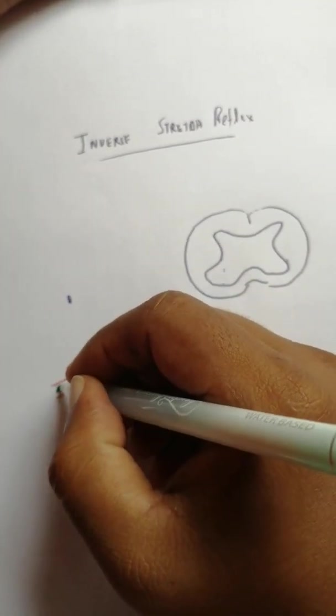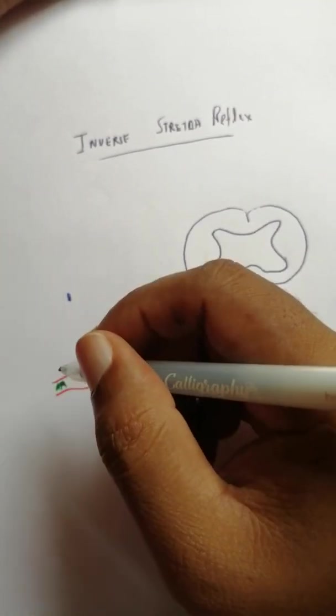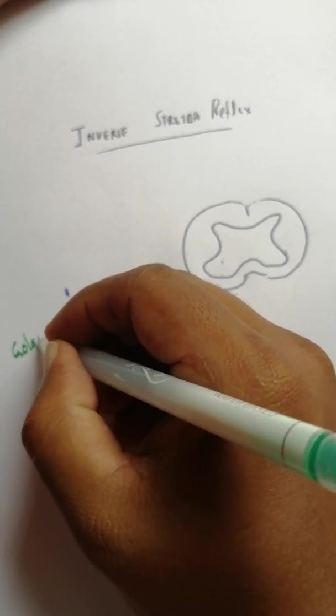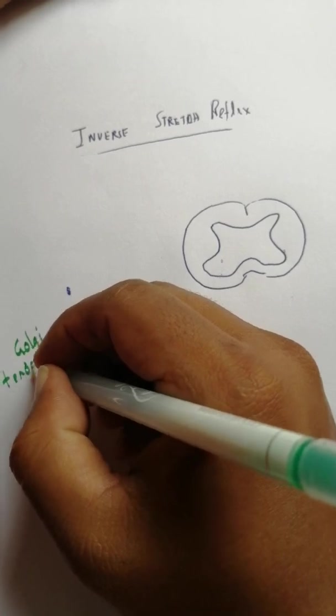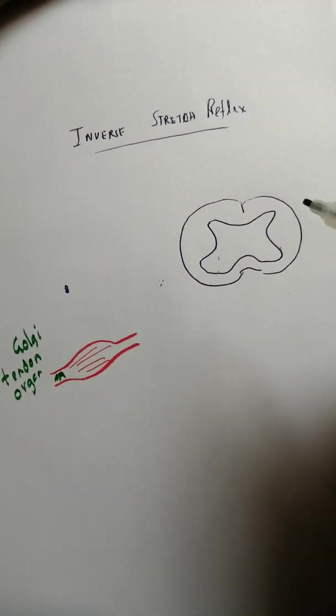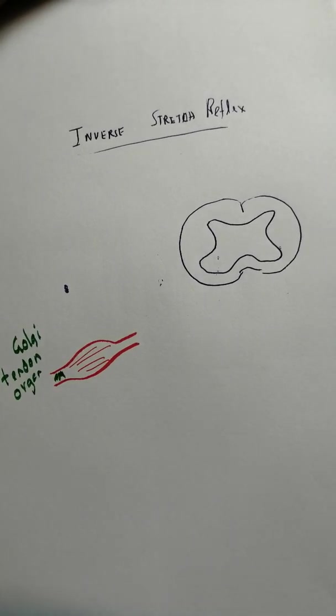The thing is that if you take a muscle, in the tendons there is a receptor which is called Golgi tendon organ. That's the Golgi tendon organ, and this is another proprioceptor.